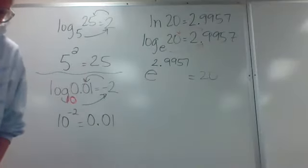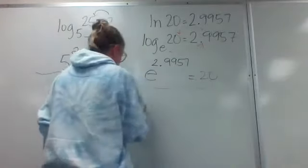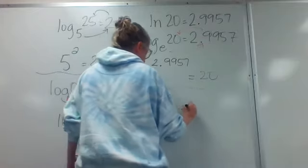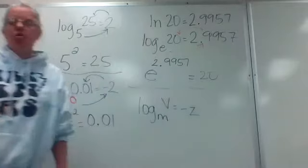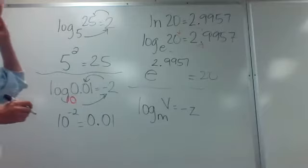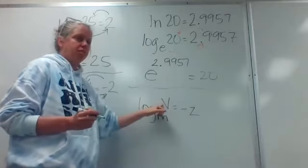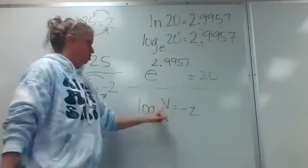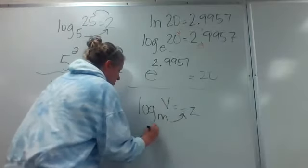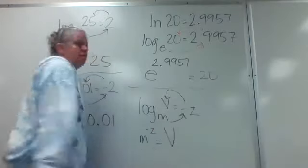Number 24: log base M of V equals negative Z. This will be case sensitive, so wherever they use capital letters you use capitals and lowercase stays lowercase. The base is M, the exponent is negative Z, and that equals V. So: M to the negative Z equals V.